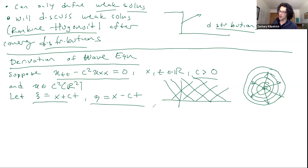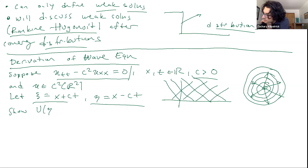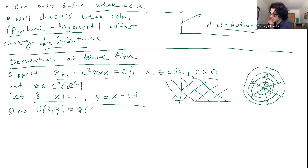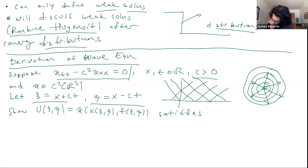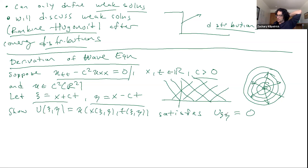Let's show, using these characteristics, how we might transform this PDE. I don't have any initial or boundary conditions yet — let's forget about those for now. I want to basically show that the formula U of (ψ, η), which equals u of X and T expressed in those coordinates, satisfies a much simpler partial differential equation: U_ψη = 0. This is second order — we're just taking this cross derivative of capital U.